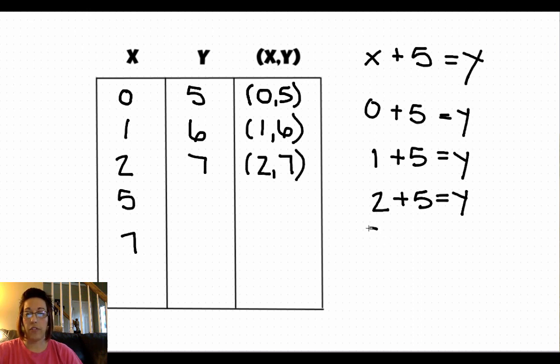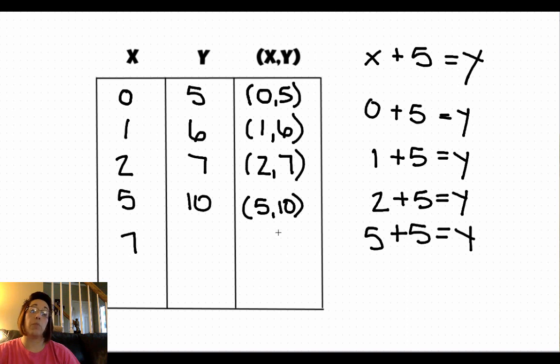We plug 5 in for x. 5 plus 5 equals y. Well, 5 plus 5 is 10. So our ordered pair becomes 5, 10. The ordered pair is really important for when we start graphing these functions.